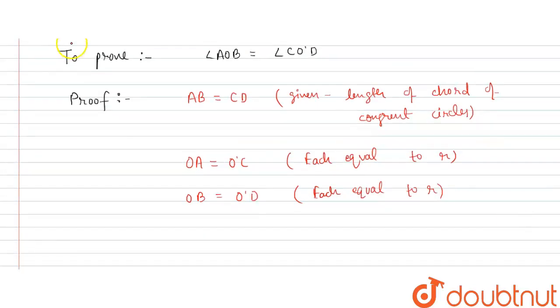So we can say by SSS, side-side-side congruency, we can say that triangle AOB is congruent to triangle COD.